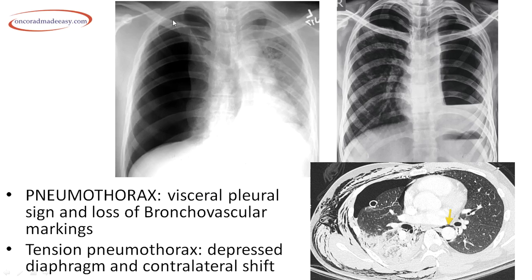Opposite of white-out lung is a large black-out lung — there is large air in the hemithorax with absence of bronchovascular markings and the visceral pleural layer is visible, indicative of pneumothorax. When this is accompanied by shift of the trachea, mediastinum, and cardiac shadow towards the contralateral side, with depression of the hemidiaphragm, this is indicative of tension pneumothorax.